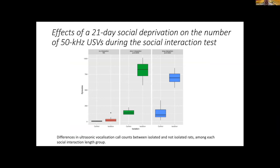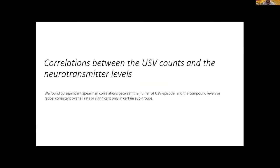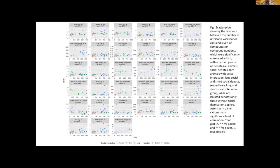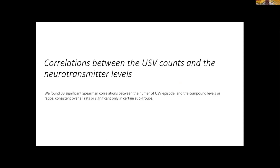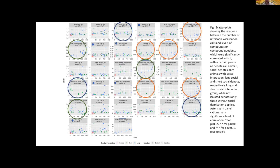What are the effects of 21 days of social deprivation on the number of 50 kHz USVs during the social interaction test? In isolated animals we found increased levels of ultrasonic vocalizations in both short and long social interaction. Regarding correlations between USV count and neurotransmitter levels, we found 33 significant correlations between the number of USV episodes and various neurochemicals.